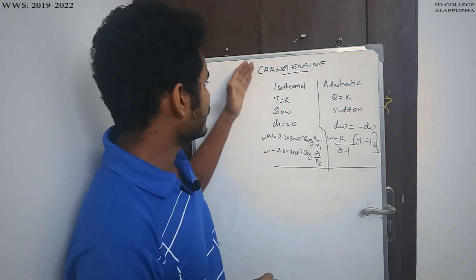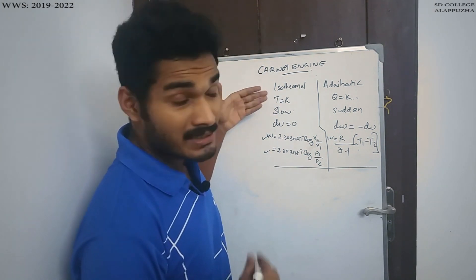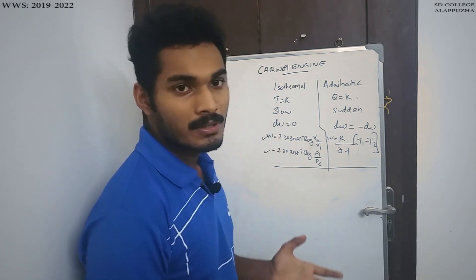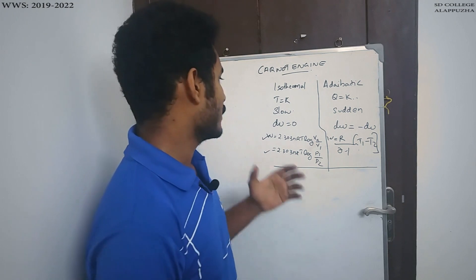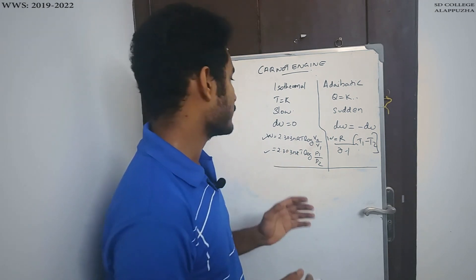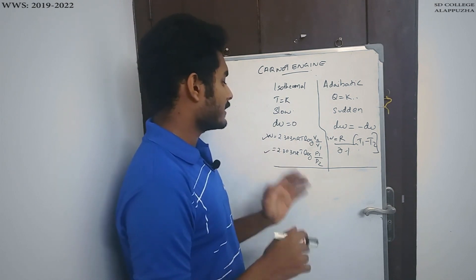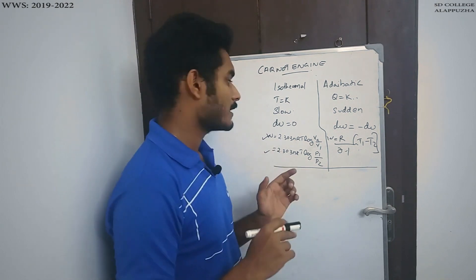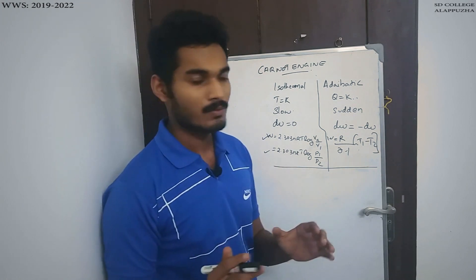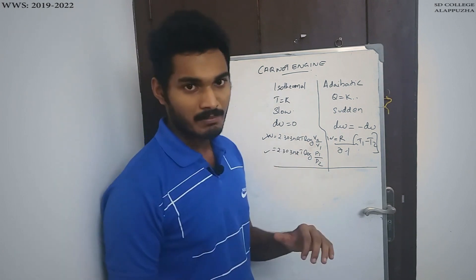In the isothermal process, the temperature is constant and it is a slow process. The change in internal energy dU is zero. The work done equation is 2.303 nRT log V2 by V1, where V1 is the initial volume and V2 is the final volume. Alternatively, it is 2.303 nRT log P1 by P2, where P1 is the initial pressure and P2 is the final pressure.